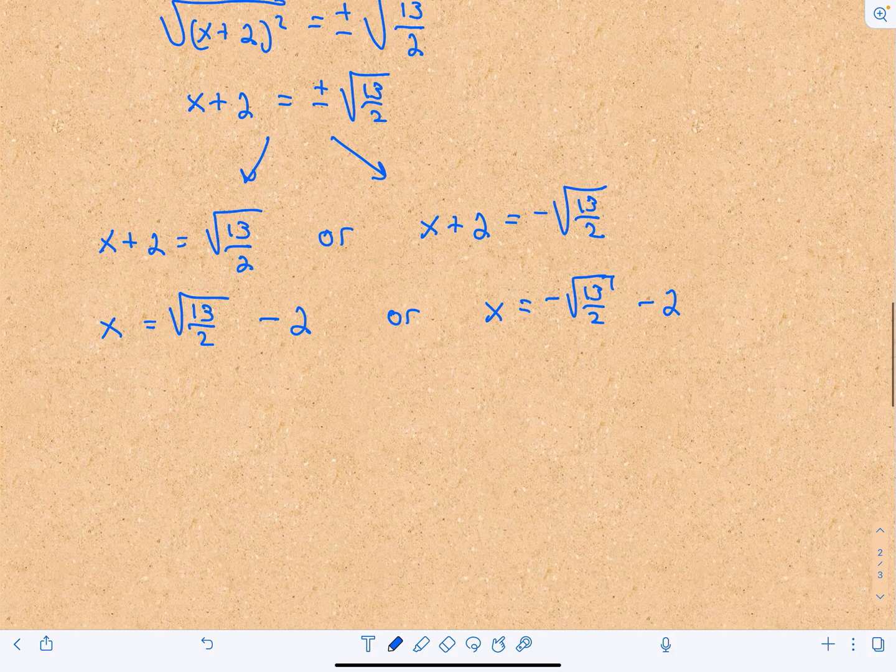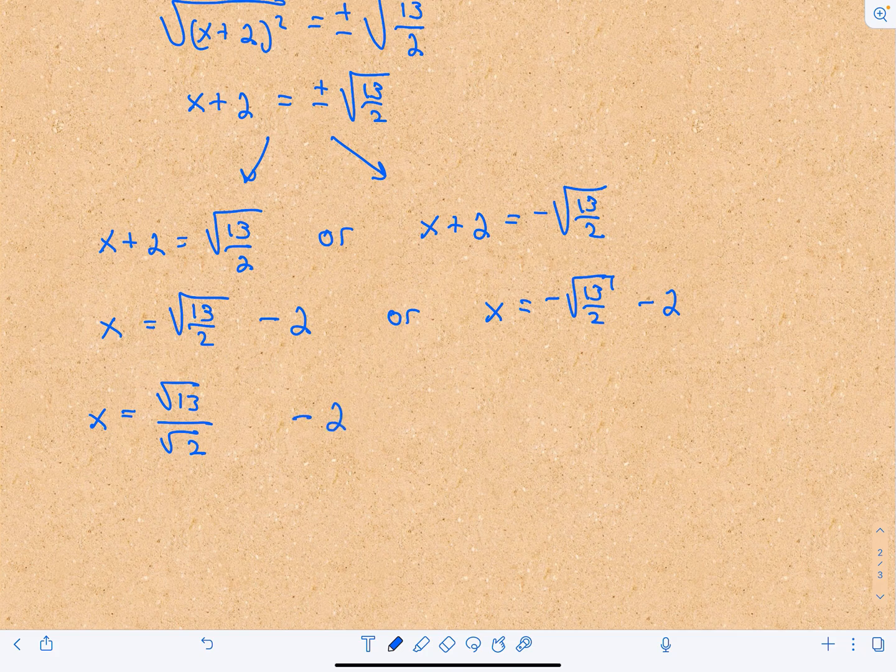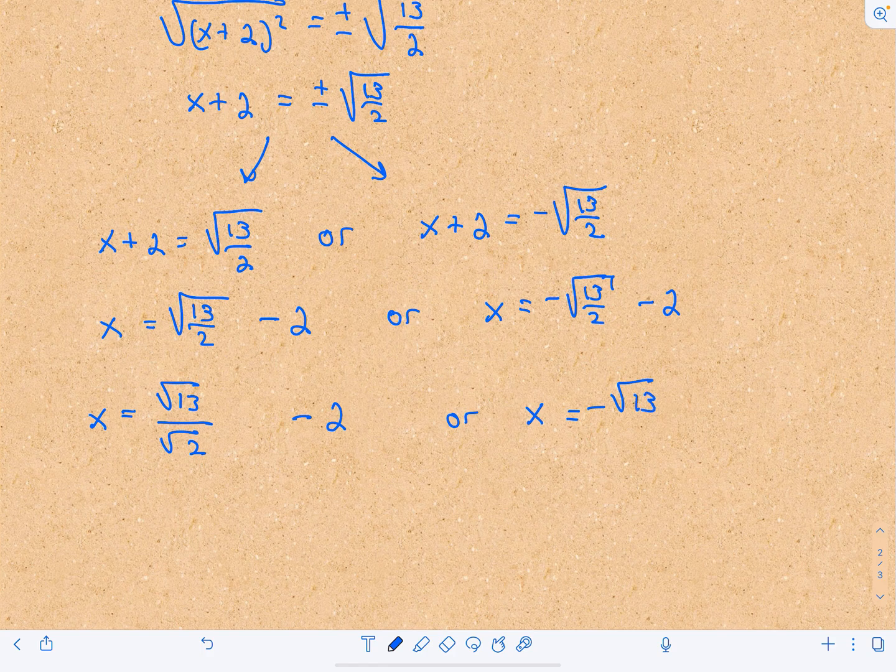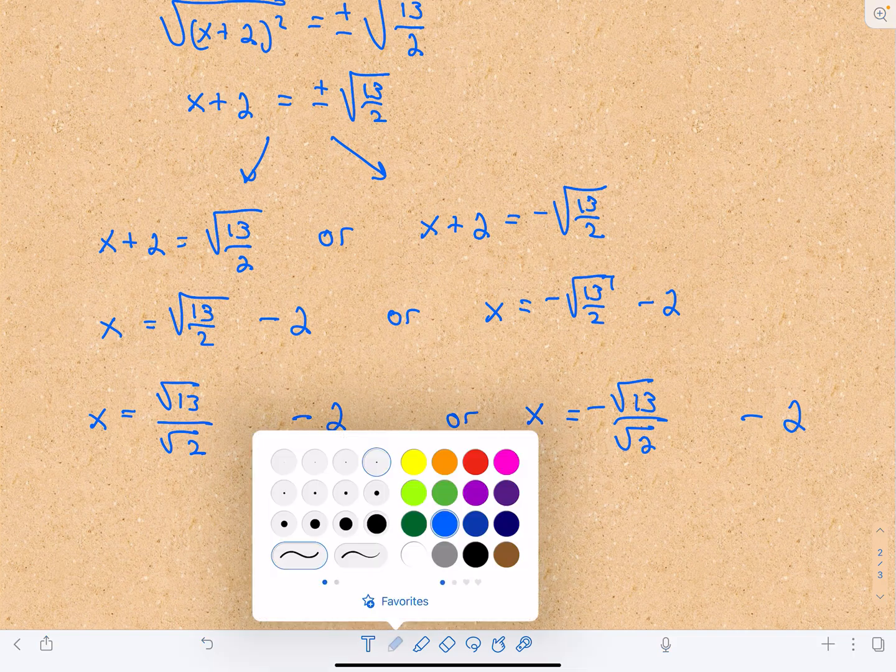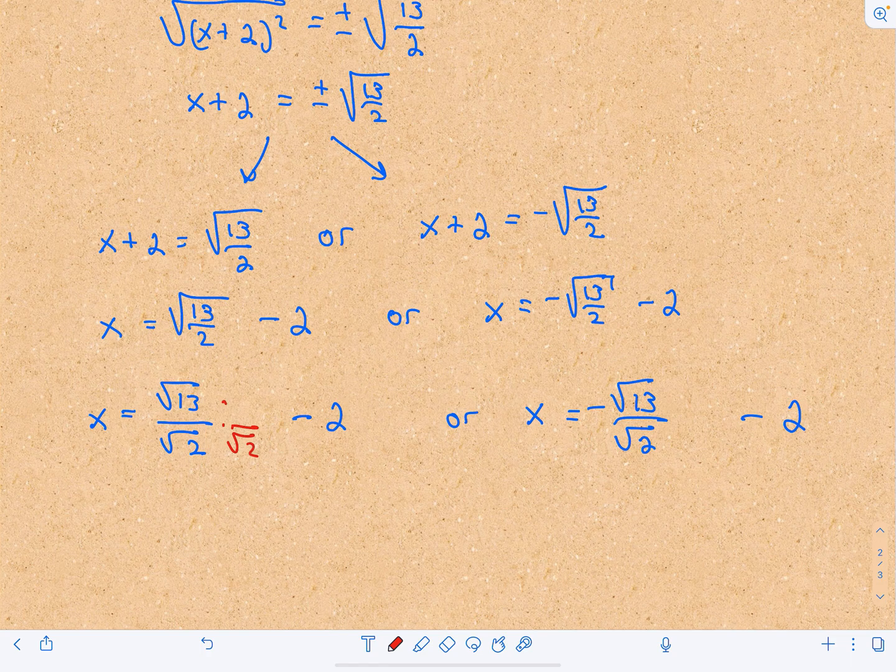Typically you'll rationalize the denominator. We could write √(13/2) as √13/√2. Typically you're going to rationalize the denominator, so I'm going to multiply top and bottom by √2, just of my fraction involving √13/√2.